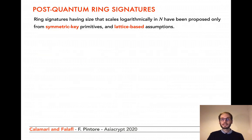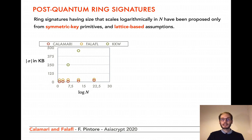Post-quantum ring signatures having signature sizes which scale logarithmically in n have been proposed only from symmetric key primitives and lattice-based assumptions. In terms of signature sizes, the state of the art for symmetric key primitives is the scheme by Katz, Kolesnikov, and Wang — KKW in the graph. As you can see, the signatures produced with Calamari and Falafel have sizes that are smaller than those produced with KKW, due to the better multiplicative factor of log of n.